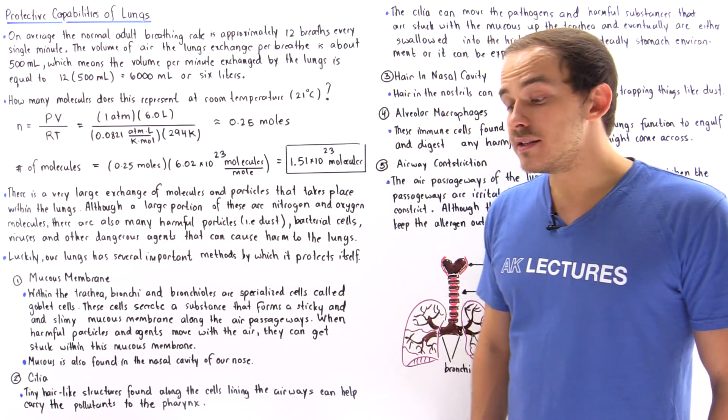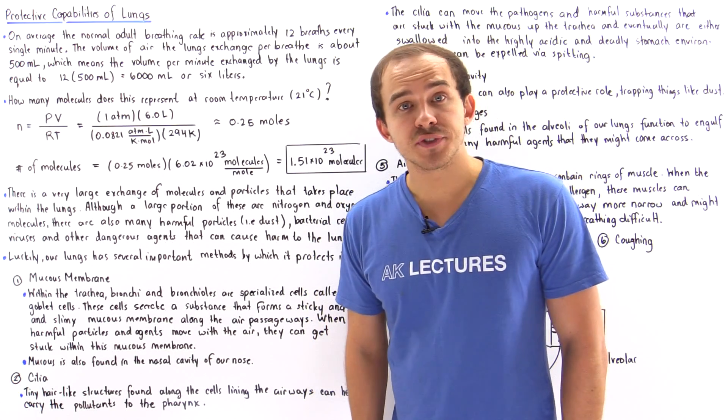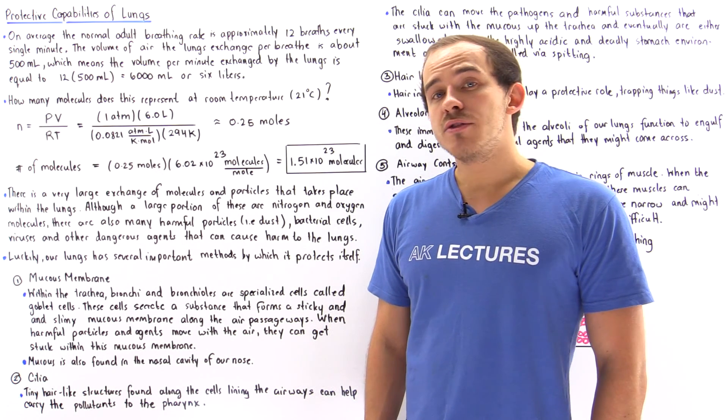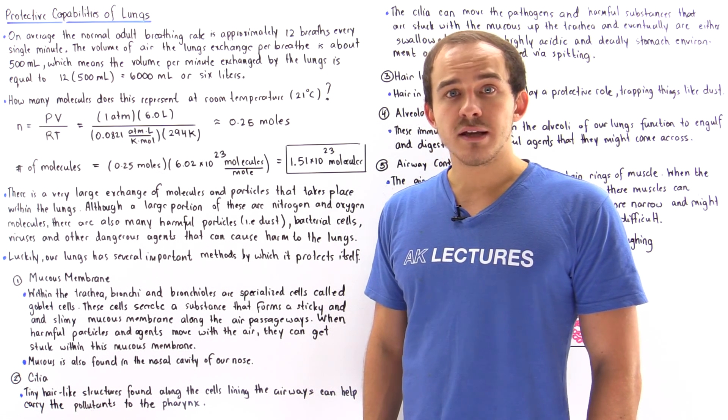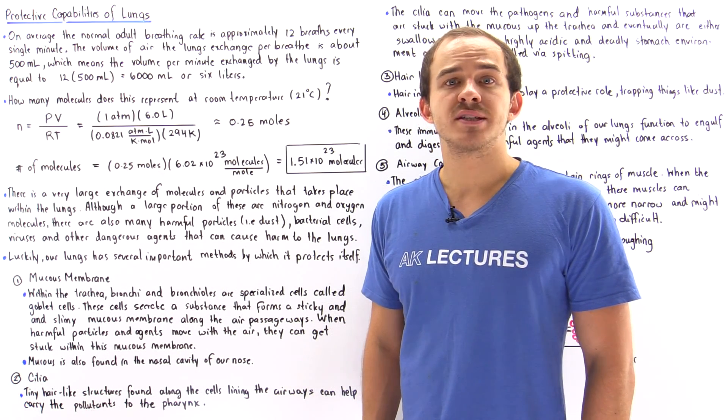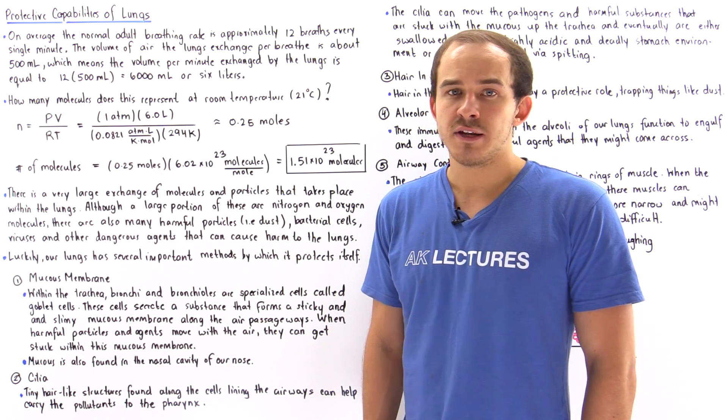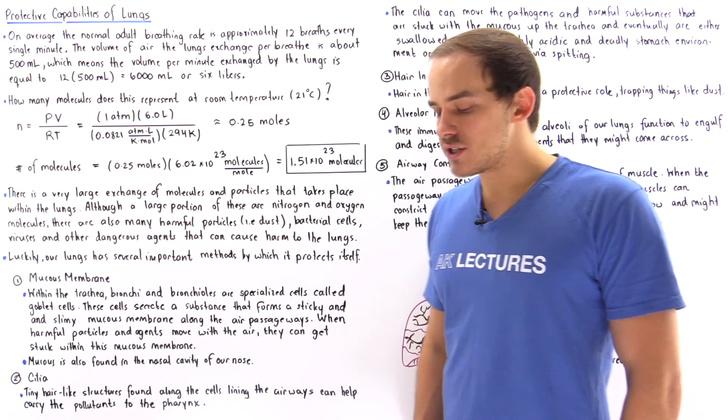On average, the resting adult takes about 12 breaths every single minute. This number can greatly increase if the individual is undergoing some type of strenuous activity, for example running or swimming.